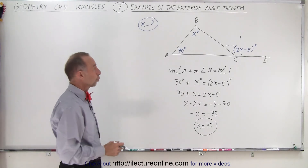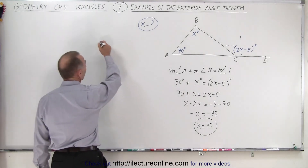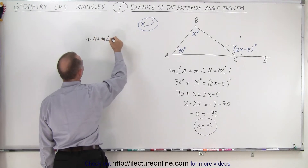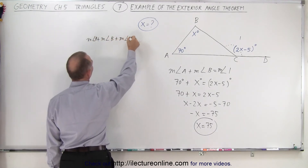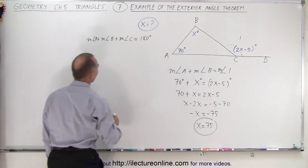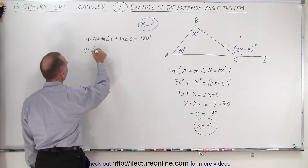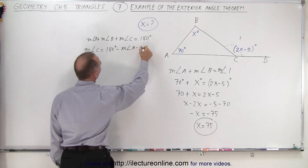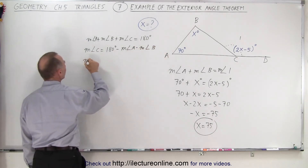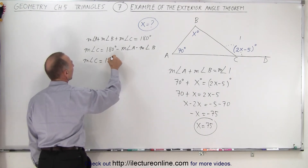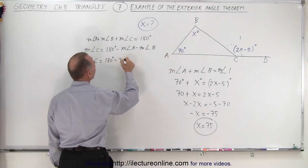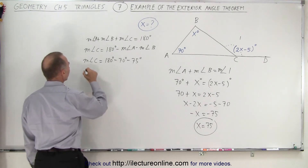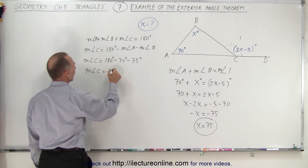Let's check to make sure. The measure of angle A plus the measure of angle B plus the measure of angle C must add up to 180 degrees. So the measure of angle C equals 180 degrees minus the measure of angle A minus the measure of angle B, which is 180 minus 70 minus 75. The measure of angle C equals 35 degrees.